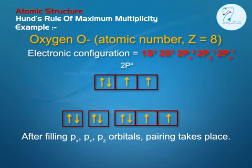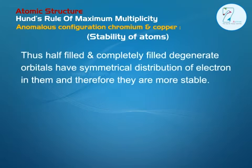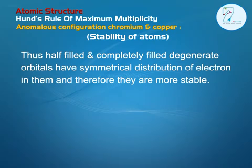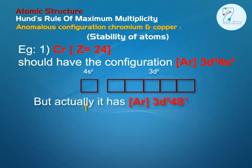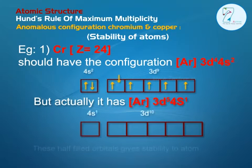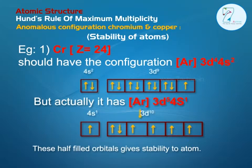This is called Hund's Rule. Anomalous Configuration: This concept actually explains the reason for stability of chromium and copper atoms. Half-filled and completely filled degenerate orbitals have symmetrical distribution of electrons and therefore they are more stable. Example 1 — Chromium: Atomic number Z is equal to 24. It should have the configuration Argon 3d4, 4s2.